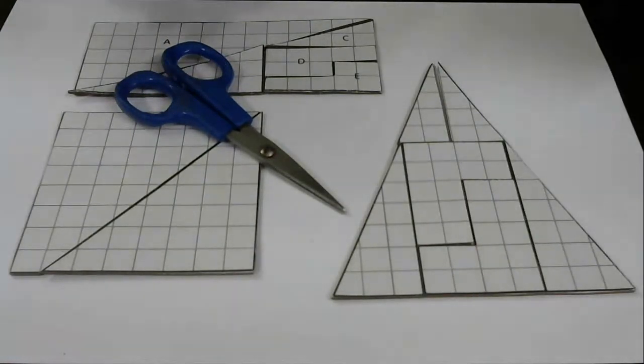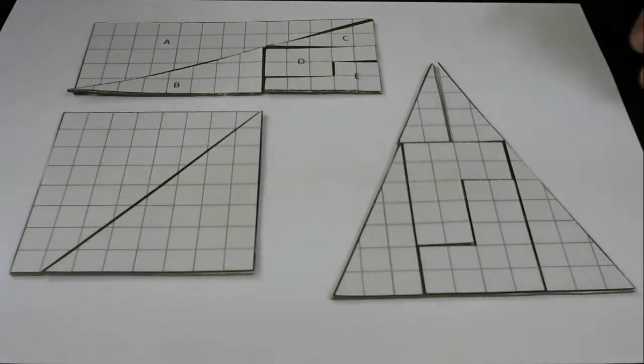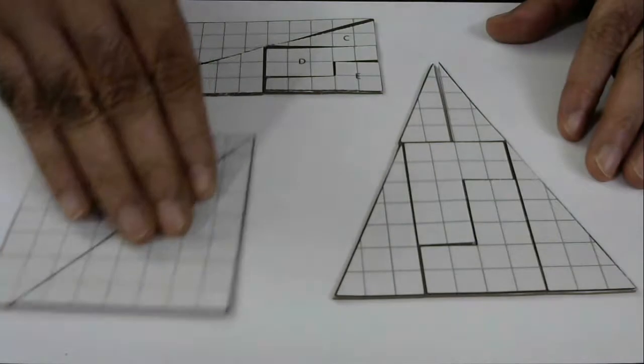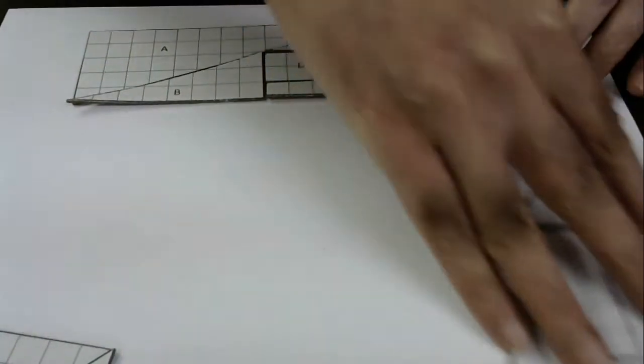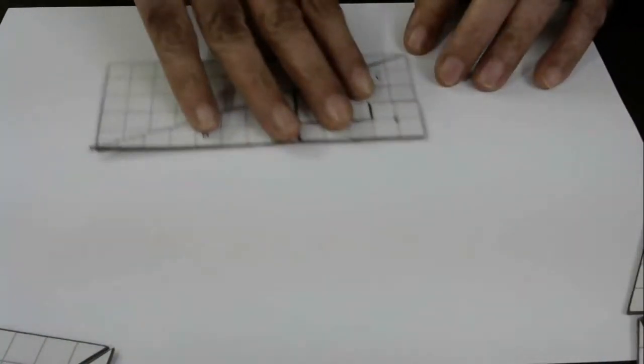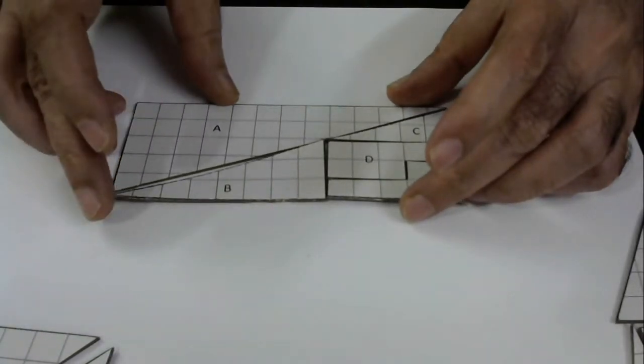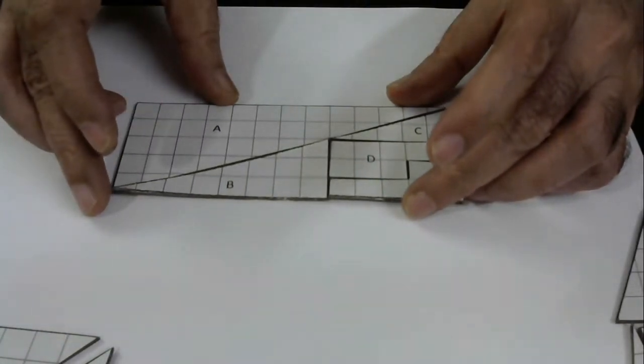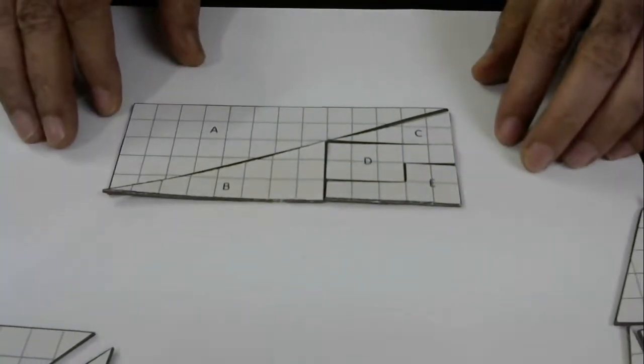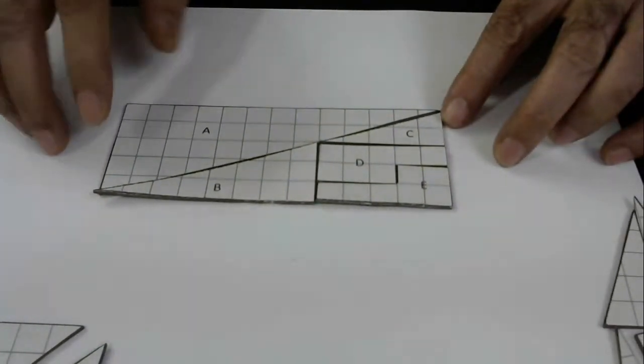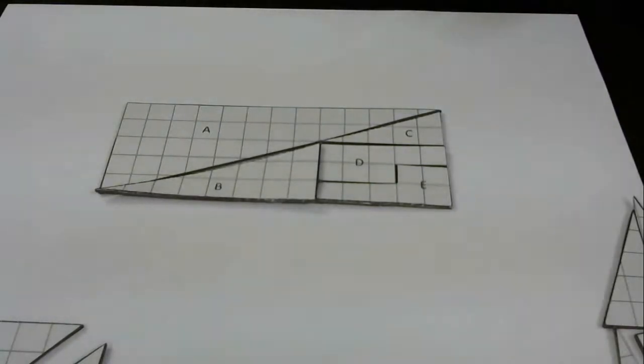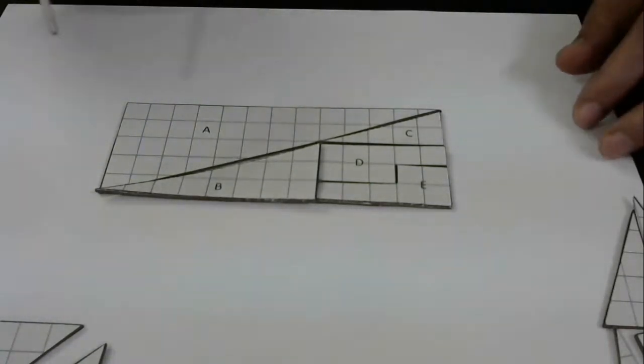Now let me show you how to do magic with these. We'll start with the simple one which is our rectangle here. In a rectangle it's very easy to count the number of squares inside. How will you count? You just multiply the height and width.